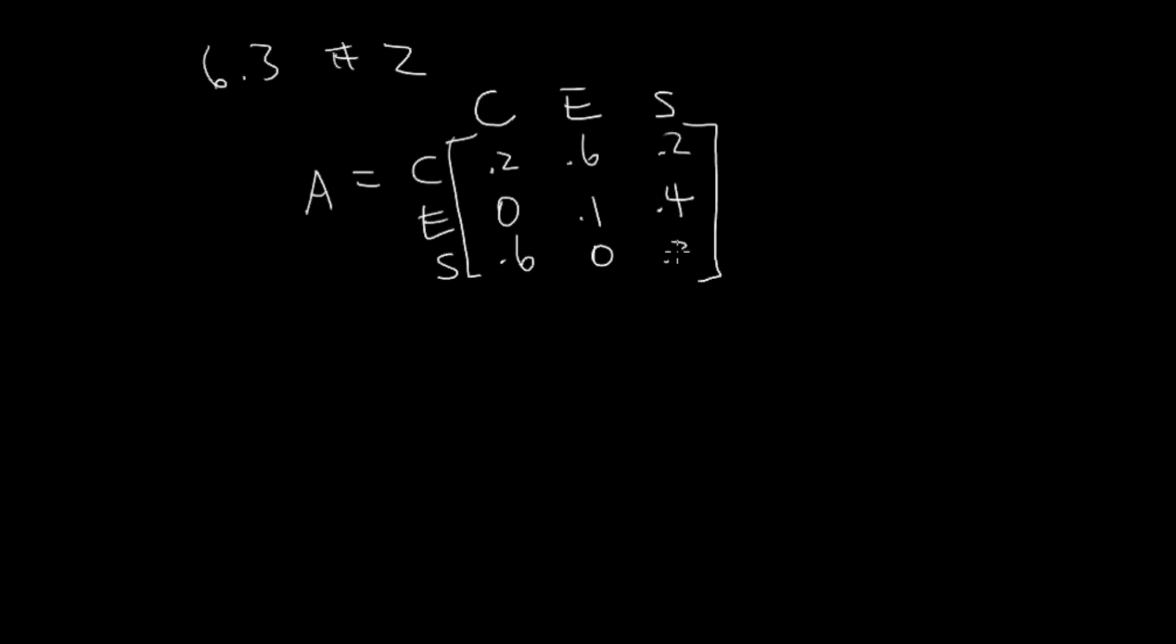So here we have A, and then we know that X is 30, 20, and 40, and we're trying to find our D. We know that D equals I minus A times X.